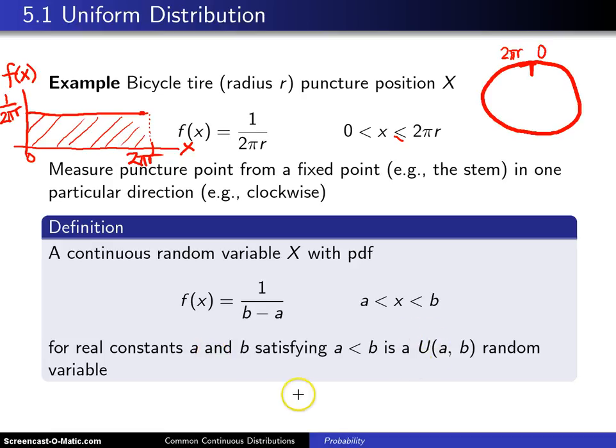The uniform distribution comes up so often that a single letter here will be used to describe it, and the parameters are A and B.